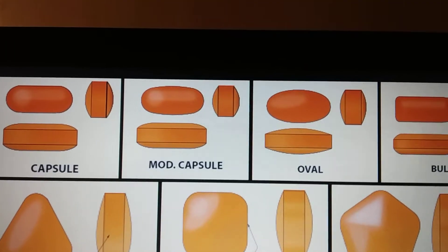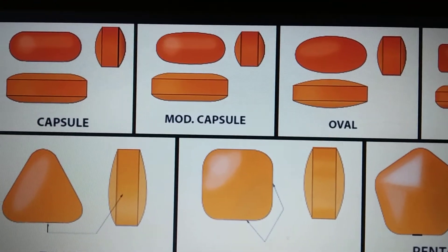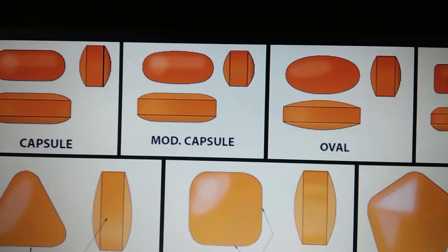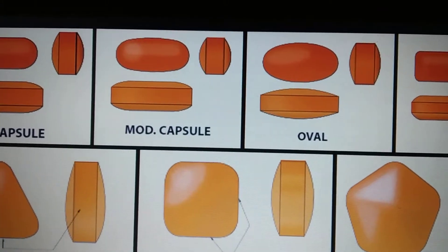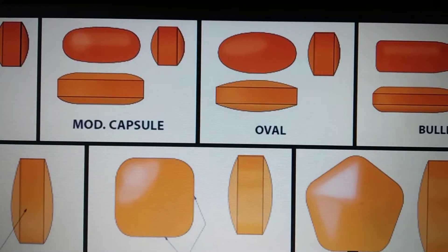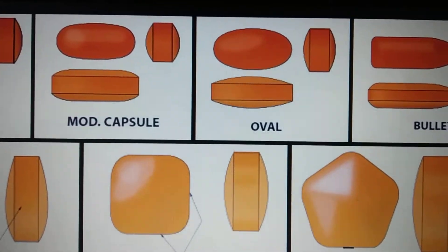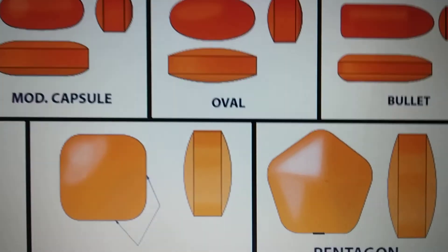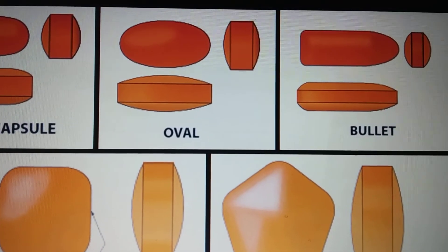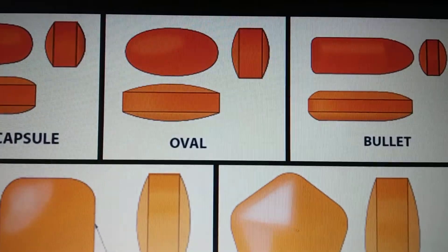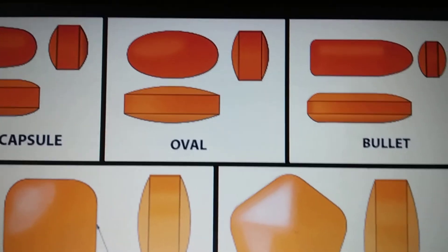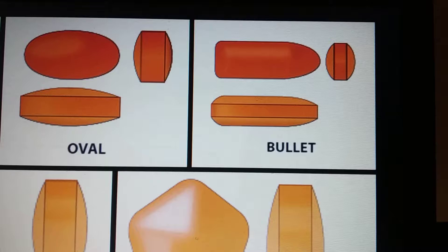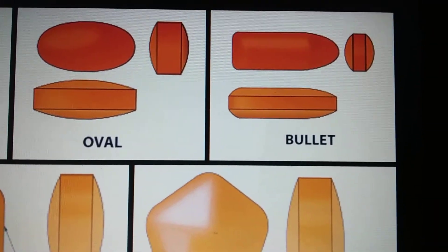Next we are going to see some more shapes. As we saw in the introduction, there can be capsule-shaped tablets. Then there is the modified capsule shape tablet — the surface of the tablet is modified and it is flat in nature, that's why it is called modified capsule shape. Next one is oval-shaped tablets, which are very common in the industry, and the bullet shape, which is not very common but there are a few brands associated with such tablets.